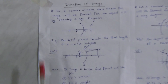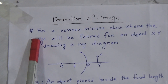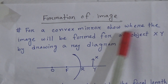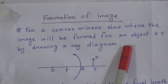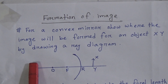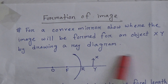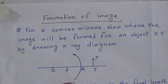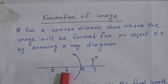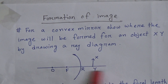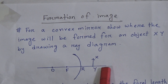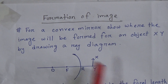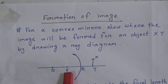Today we will discuss formation of image. The first question: for a concave/convex mirror, show where the image will be formed for an object XY by drawing a ray diagram. We are given a convex mirror where F is the focal point, O is the center of the sphere, and R is the pole. The object XY is placed inside the focal length of the convex mirror.